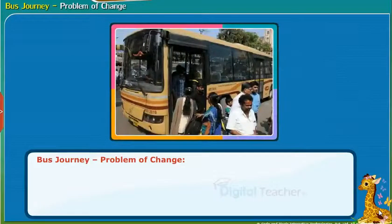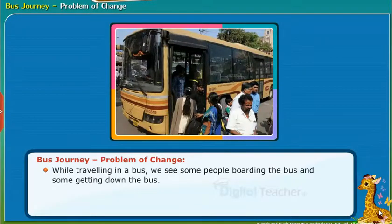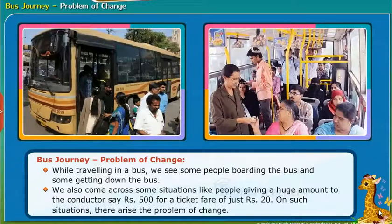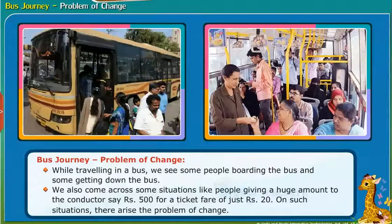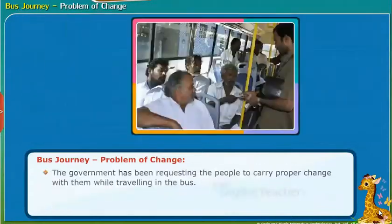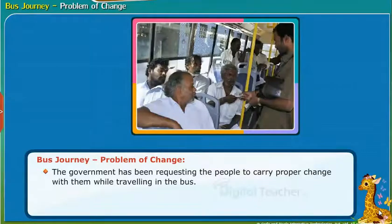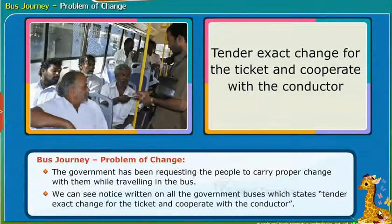While traveling in a bus, you might have noticed the problem of change. We see some people boarding and some getting down the bus. We also come across situations like people giving a large amount, say Rs. 500, to the conductor for a ticket fare of just Rs. 20, causing the problem of change. The government requests people to carry proper change while traveling. Notices on government buses state: 'Tender exact change for the ticket and cooperate with the conductor.'